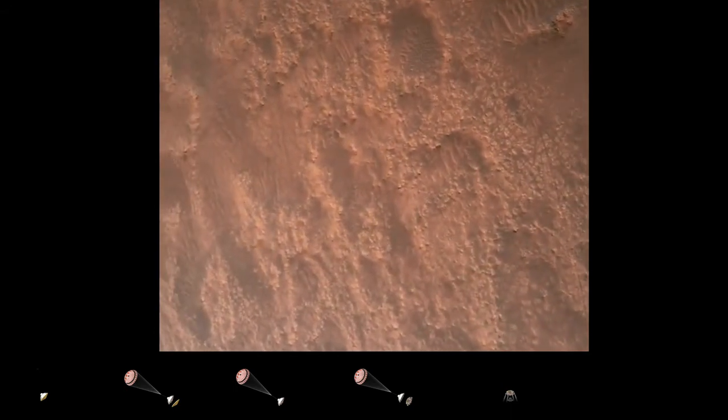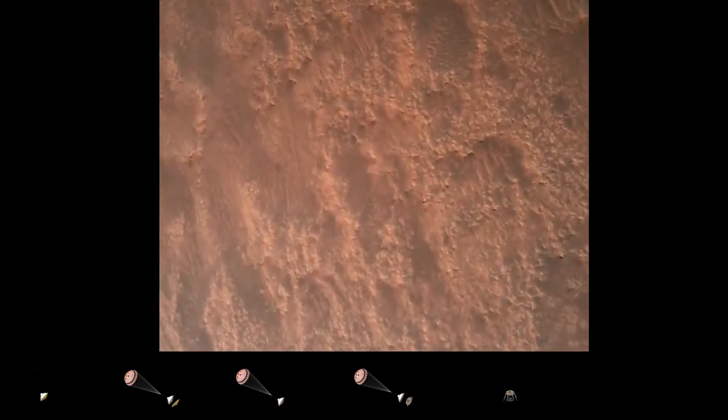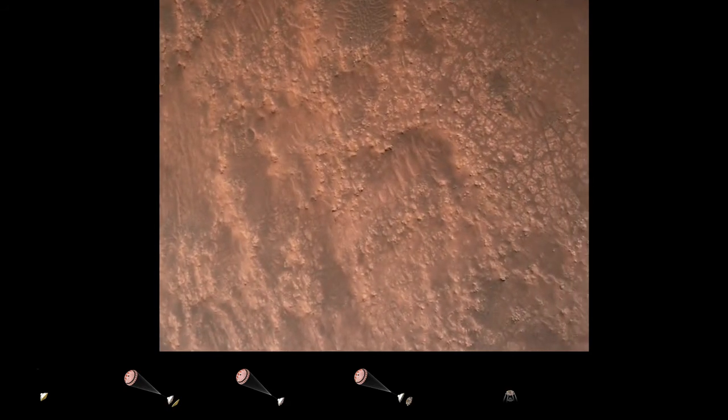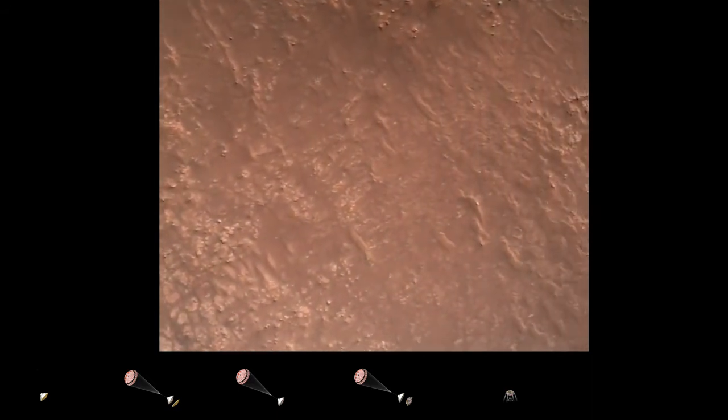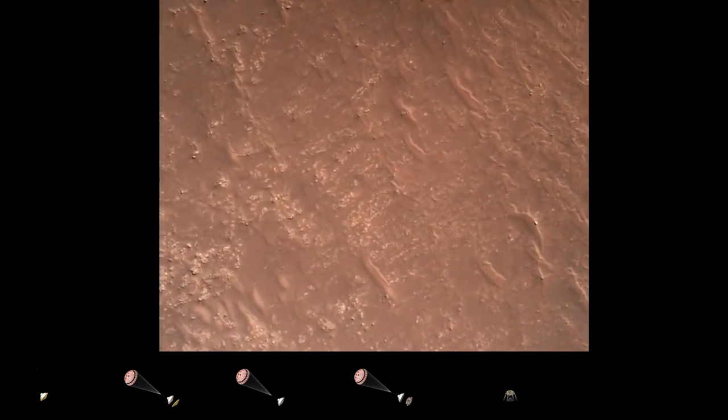Terrain relative navigation safety, bravo. We have completed our terrain relative navigation. Current speed is about 30 meters per second at an altitude of about 300 meters off the surface of Mars.